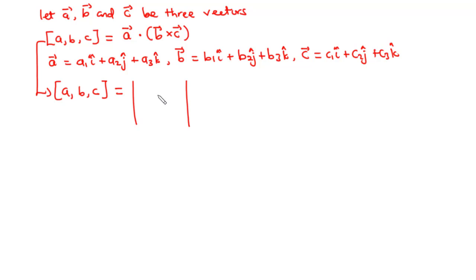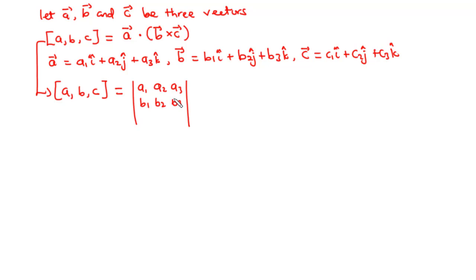Each row of the matrix is occupied by the coefficients of the unit vectors along the X, Y, and Z axis for each of the vectors given. So for row one we have A1, A2, A3; for row two we have B1, B2, B3; and for row three we have C1, C2, C3.